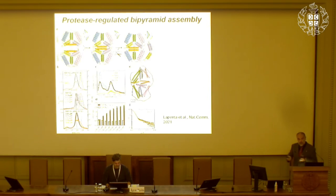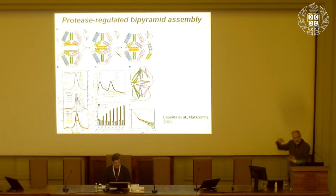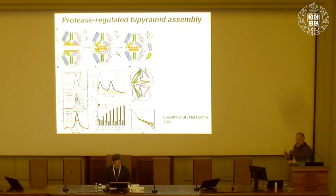We are also able to regulate the assembly of those cages — in this case by proteolysis, by positioning an inhibitory peptide at the interface. By cleavage of a protease, the peptides are released and the tetrahedra assemble into the trigonal bipyramid. We can use selected types of proteases — viral or other types — to recognize this end and assemble.